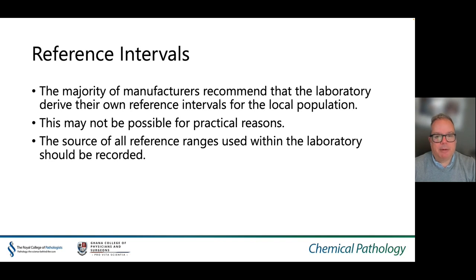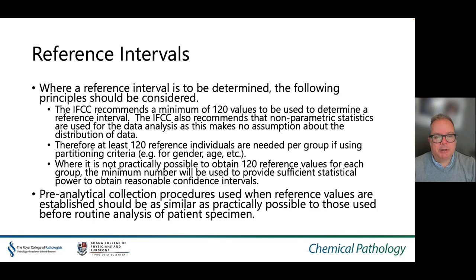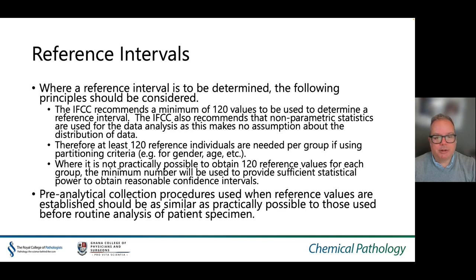The majority of manufacturers recommend that the laboratory derive their own reference intervals for the local population they serve, though this may not always be possible for practical reasons. The source of all reference ranges used within a laboratory should be recorded — usually required for accreditation purposes. Where a reference interval is to be determined, the IFCC recommends a minimum of 120 values and the use of non-parametric statistics, as this makes no assumption about the distribution of data. At least 120 individuals are required for each group if partitioning criteria (e.g. age or gender) are to be considered. Where it is not practically possible to obtain 120 reference values for each group, the minimum number will be used to provide sufficient statistical power to obtain reasonable confidence intervals.